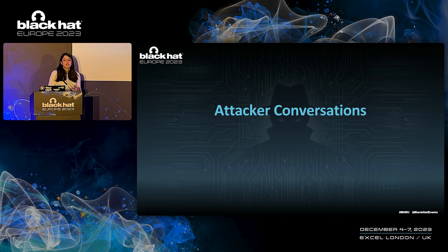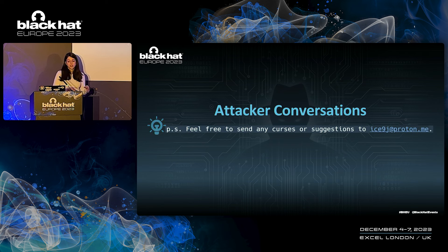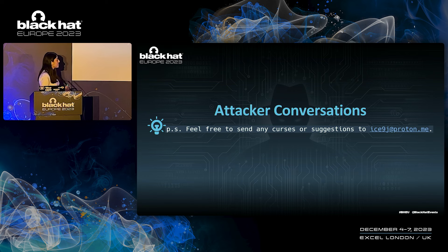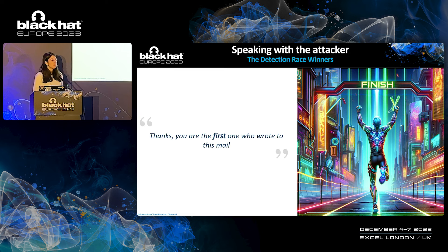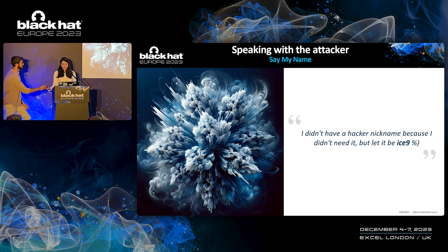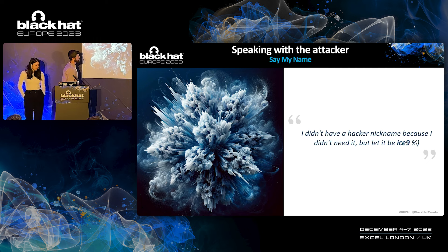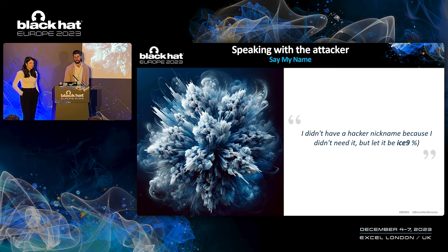Now let's get familiar with the attacker himself. Not long ago we mentioned the attacker left an email address. We decided to write to him and test our human abilities, and surprisingly the attacker actually answered us. On our first conversation with him, the attacker mentioned we were the first to write to him — surprising, as we know the attacker started attacking in September 2021 and we discovered the attack a year and a half later. We tried to ask the attacker his name, and the answer was that his name is Ice9 — like in the email, Ice9J. This got us searching the internet for what Ice9 is, and we came across a song — Ice9 by Joe Satriani, a famous guitar player.